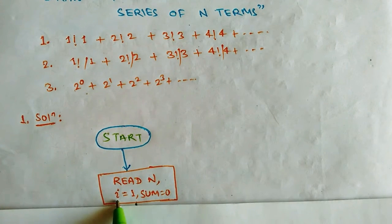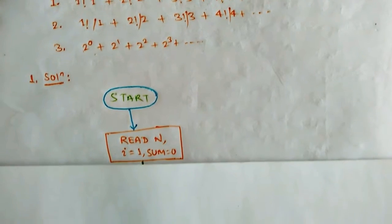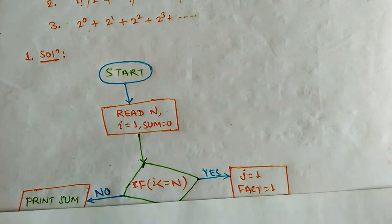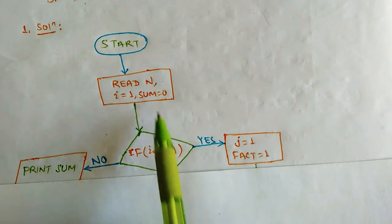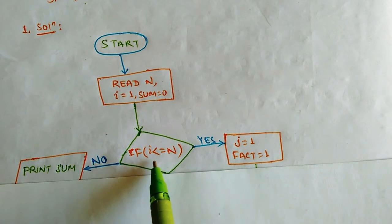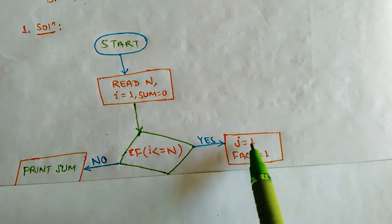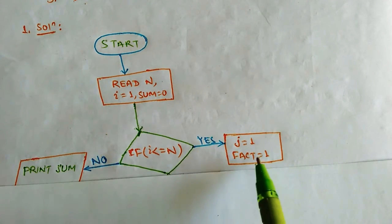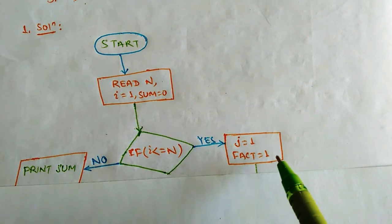We have some variables to initialize: i is set to 1 and sum is set to 0. Now our main task starts — we check the condition. We check that the value of i will go up to n. If the condition is false, it goes to the No branch; if true, it goes to the Yes part.